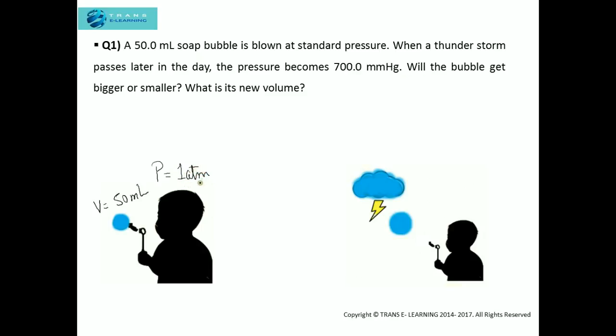When a thunderstorm passes later in the day, in the second figure you can see that the pressure becomes 700 mmHg. Will the bubble get bigger or smaller? What is its new volume? In the picture I have shown a bigger bubble. We need to find out whether this description of the bubble that I've shown here is right or wrong.